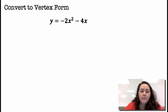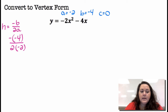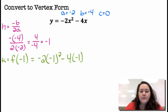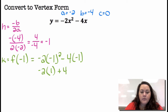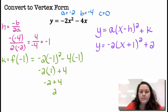This one: Y equals negative 2X² minus 4X. I don't have a constant term — no C term — so A is negative 2, B is negative 4, and C is 0. Finding H: negative B over 2A is negative negative 4 over 2 times negative 2. That's positive 4 over negative 4, which gives me negative 1. Then plugging negative 1 in for K: negative 2 times negative 1 squared minus 4 times negative 1 equals negative 2 times 1 plus 4, giving me 2. So in vertex form: A is negative 2, H is negative 1, so minus a negative 1 becomes plus 1, squared, plus K which is 2.